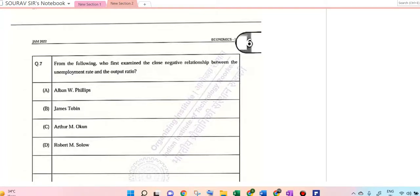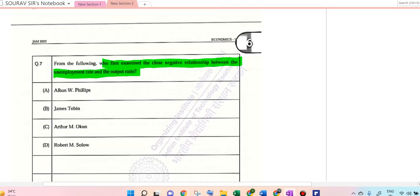Hello students, this is JAM 2022 Economics paper. I'm solving this question on the following: Who first examined the close negative relationship between the unemployment rate and the output ratio? One of the most famous and celebrated structures is Okun's Law, first observed by Arthur Okun.